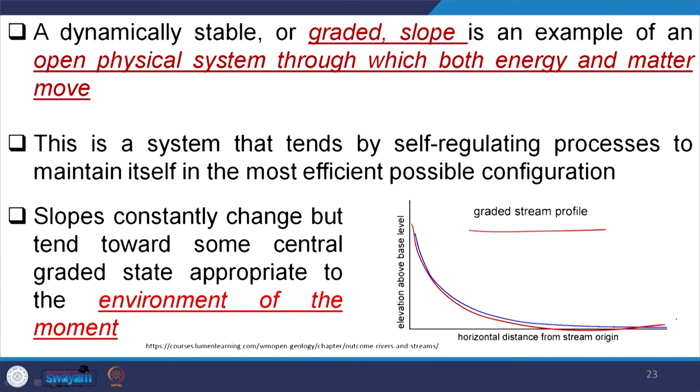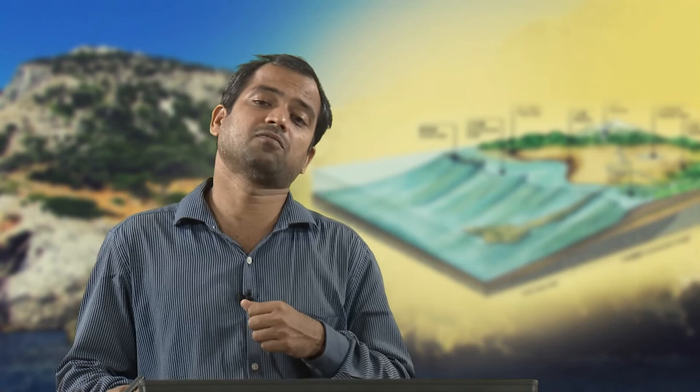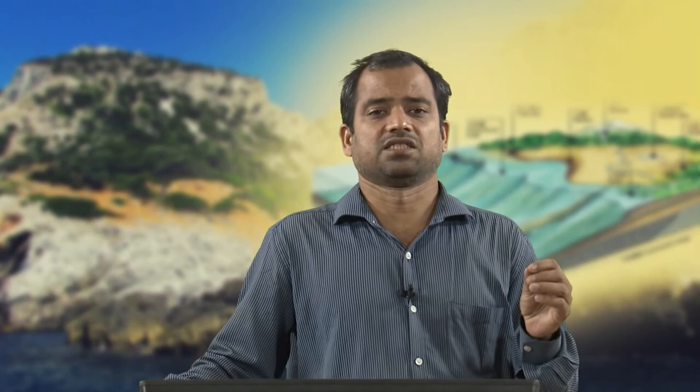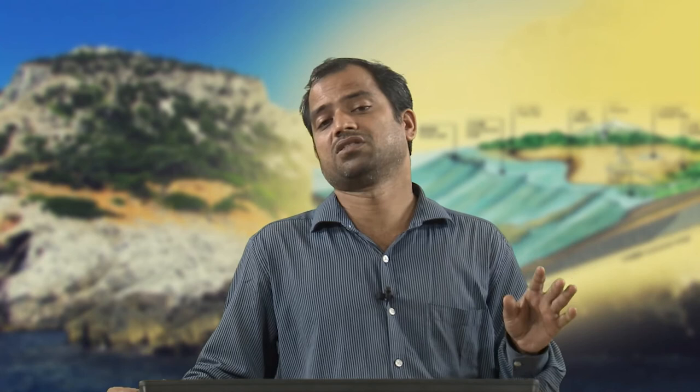Slope constantly changes but tends towards some central graded state appropriate to its environment. The rate of retreat depends upon climate, rock type, rate of material production, and rate of removal — all proportional to weathering and climatic conditions. The slope always tries to reach a graded state, which is why mass wasting continues, weathering continues, and hill slope retreat occurs. The ultimate aim of nature is to make the system graded.